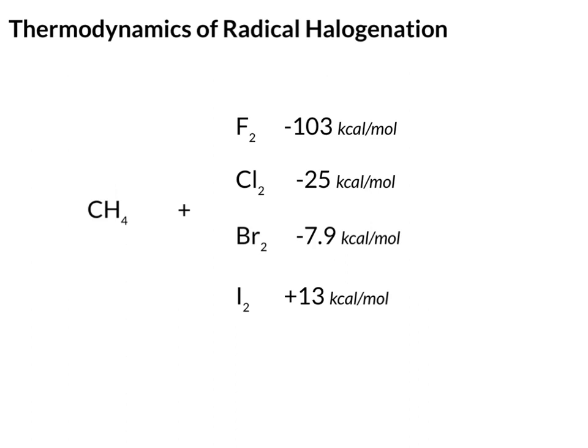So far we've looked at the radical halogenation using chlorine, but how about the other halogens? So here I have the thermodynamics of the reaction, or the delta H of the reaction, showing just how exothermic or endothermic each particular halogen would be.